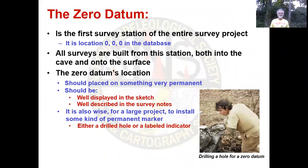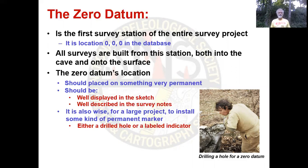Zero datum is the first survey station of the entire survey project. It is location 000 in the database — those are its XYZ coordinates. All the surveys are built from this station, moving both into the cave and onto the surface. The zero datum's location should be placed on something very permanent. It should be well displayed in the sketch and well described in its notes. It's also wise for a large project to install some kind of permanent marker, either a drilled hole or a labeled indicator.